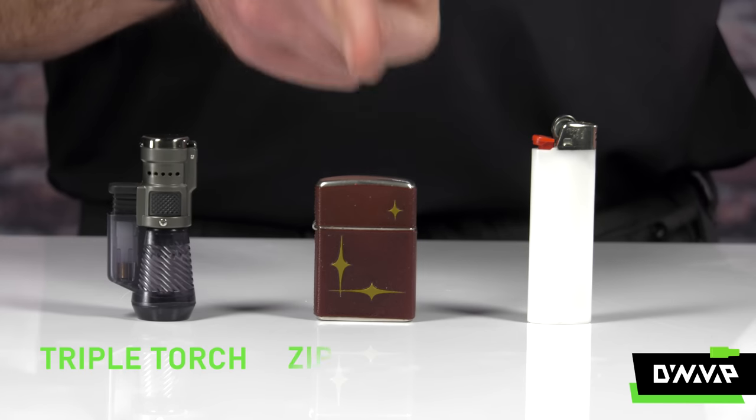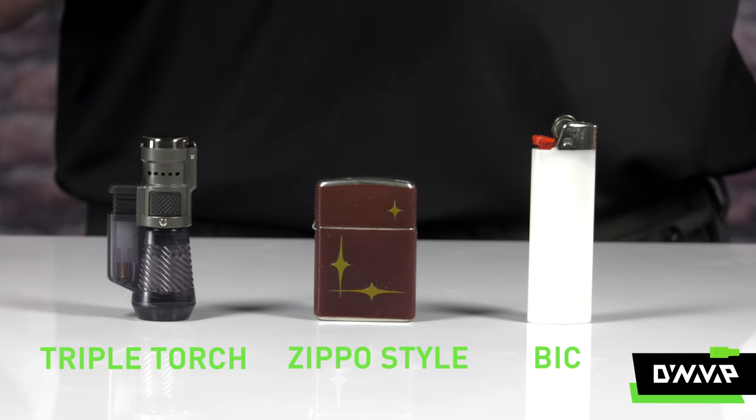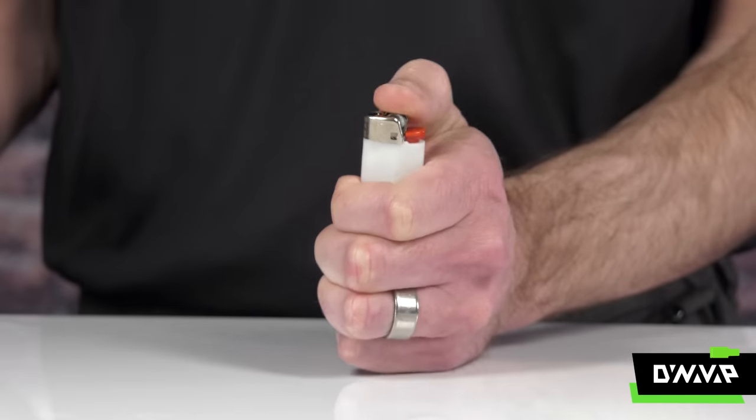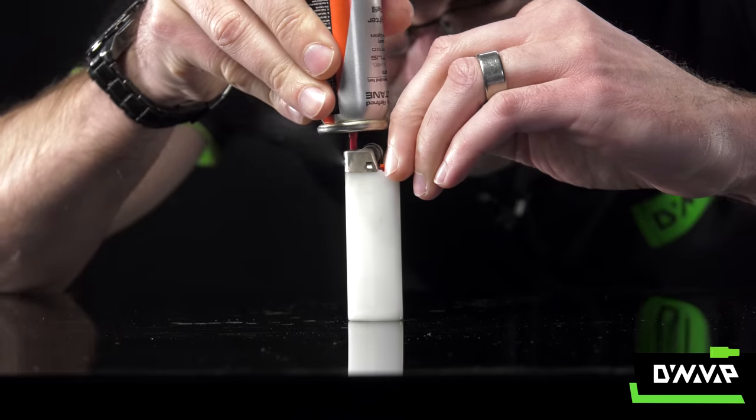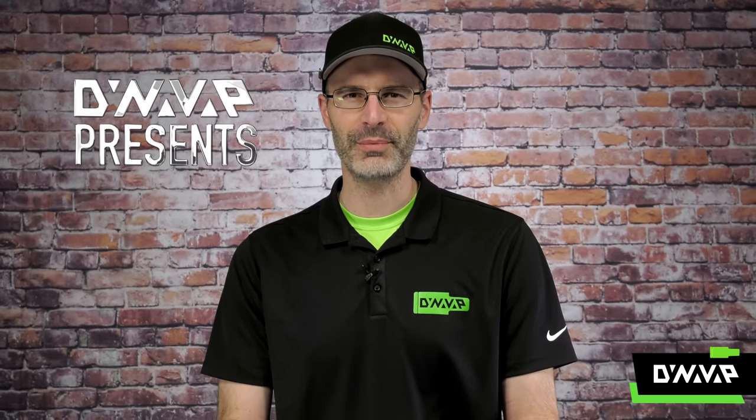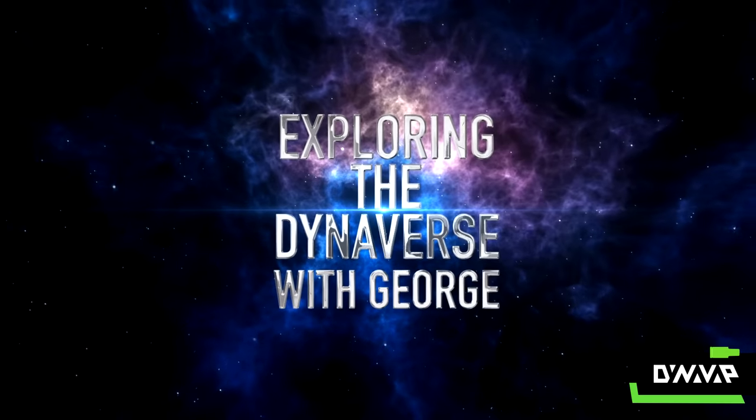When you think of a lighter, what comes to mind? I think of a torch, a Zippo, or a Bic. But what are the differences between these three types of lighters? What's inside and how do they function? Can a Bic be refilled? All these answers and more on today's episode of Exploring the Dynaverse.